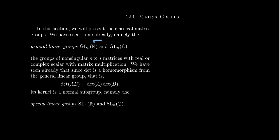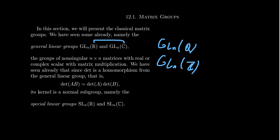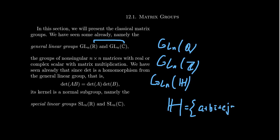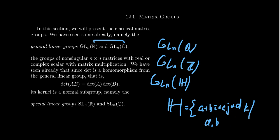There is some ability to change the scalars in play. We could talk about GLN of Q — matrices with rational entries. Some people even talk about GLN of Z, with just integer scalars. We could also talk about GLN of the quaternions — the Hamiltonian numbers — which look like A plus BI plus CJ plus DK, where A, B, C, D are real numbers. These are four-dimensional numbers whose units 1, I, J, and K come from the quaternion group we've seen previously.